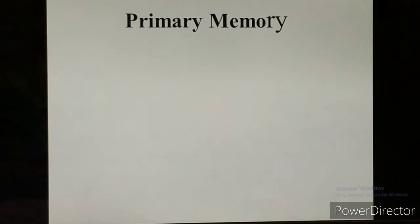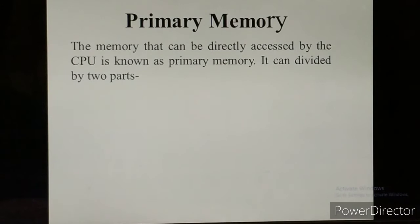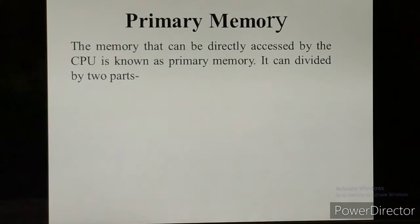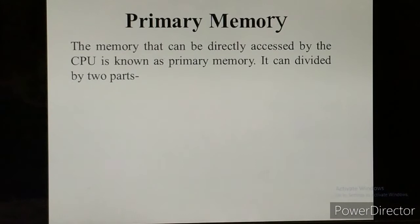Primary memory — the memory that can be directly accessed by the CPU is known as primary memory. Primary memory is also known as main memory and internal memory. It is used to store the data and programs currently running in the computer. Primary memory is essential for the working of a computer.